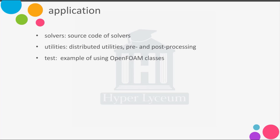In the utility directory, you can find the distributed utilities for pre- and post-processing data. For example, if you want to generate a mesh using the blockMesh utility, you can find the source code of blockMesh there. Or if you have a mesh generated by Gambit or ANSYS Meshing and you want to convert it to OpenFOAM, you can find a utility in this directory to convert the mesh from ANSYS or Fluent to OpenFOAM. In the test directory, you can find some examples of using OpenFOAM classes — for instance, what is a dimensionless scalar field, how the matrix works — and it is useful to check these examples.